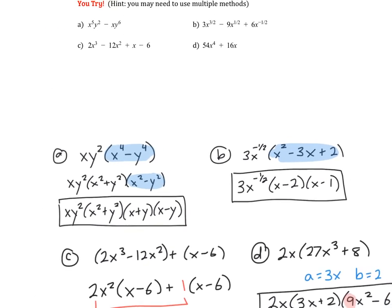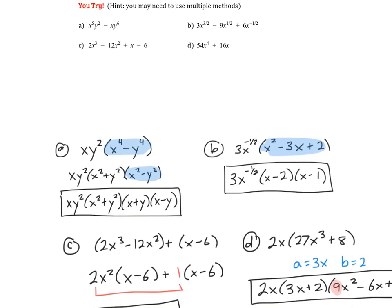Okay, let's go over these four problems. So problem A took two different or actually three different types of steps for factoring. First, you have to notice there's a GCF of xy squared, leaving you with this, which you can factor using difference of two squares, which this last factor you can factor again using difference of two squares. So our final answer should be this in the box.